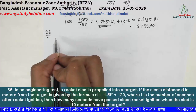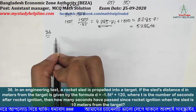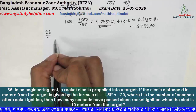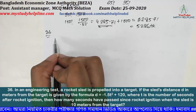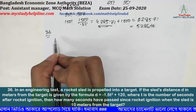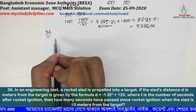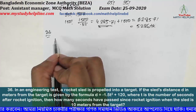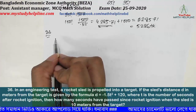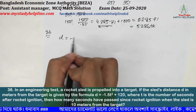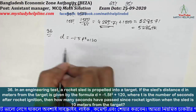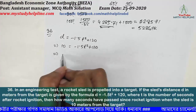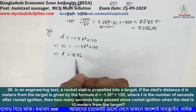Number 36: in an engineering test, a rocket's lead is propelled into a target. The distance d in meters from the target is given by d = -1.5t² + 120, where t is the number of seconds after rocket ignition. How many seconds have passed since ignition when the slit is 10 meters from the target? Setting 10 = -1.5t² + 120 and solving gives t ≈ 8.56 seconds.